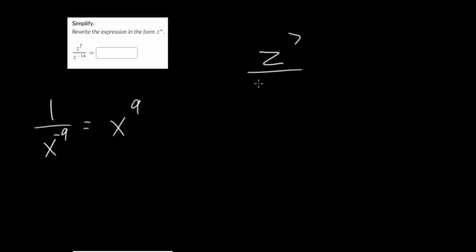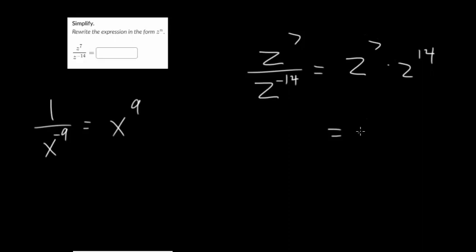Let's do one final question: z to the 7th over z to the minus 14. If you have an exponent that's negative in the denominator, you can rewrite it as a positive exponent in the numerator. So with that idea, the minus 14 we could put up in the numerator and make it positive. Then we have 7 z's multiplied together, and those are multiplied by 14 z's. So in total, you would have 21 z's multiplied together, giving z to the 21st.